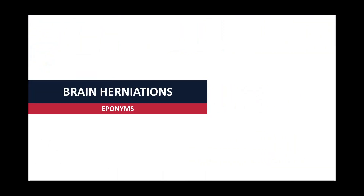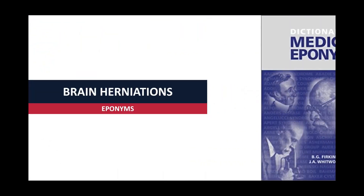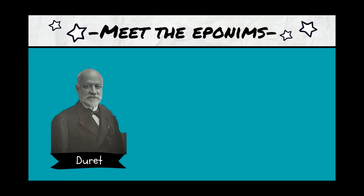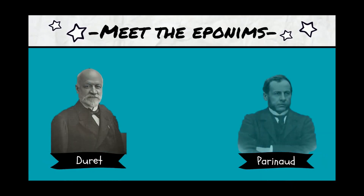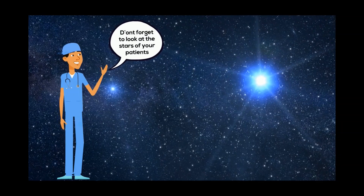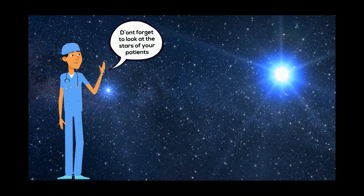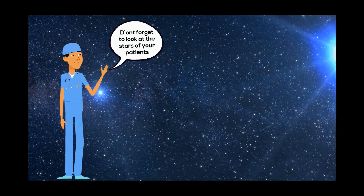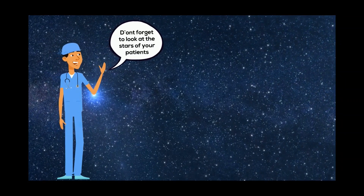On the next lecture we are going to open the dictionary of medical eponyms of brain herniations. We are going to meet Duret, Parinaud, and Kernohan. And remember the advice: don't forget to look at the stars of your patients. If you liked the video, give a thumbs up and subscribe to our YouTube channel.